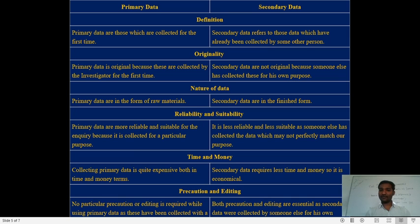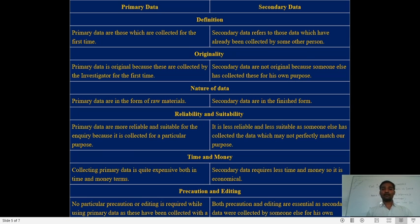Regarding the nature of data: primary data is in the form of raw materials — it is spread everywhere and the investigator collects it from different sources using different methodologies, so it is not structured. Secondary data, on the other hand, is in finished form because it has already been collected and is well-structured.